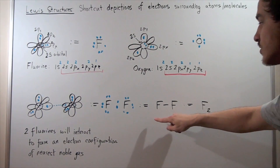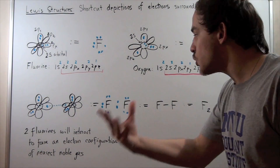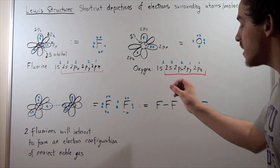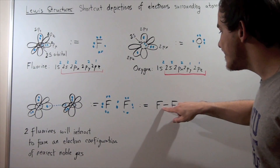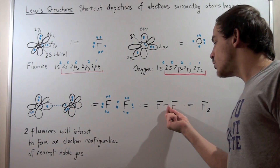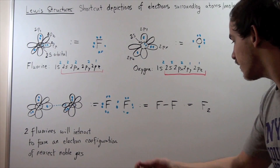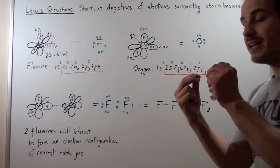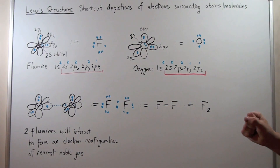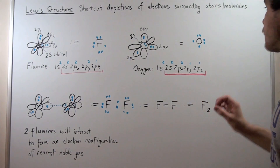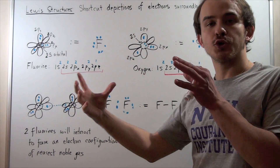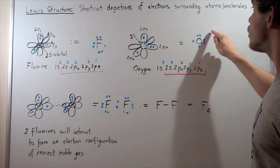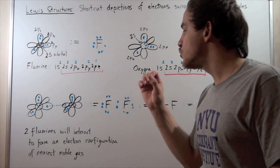This can also be written in an even shorter way: instead of drawing all outer electrons, we draw a single line between the two fluorines representing equal sharing of electrons, giving us F₂. This same method applies to oxygen: when two oxygen atoms interact, they form a double bond, sharing electrons equally to achieve the electron configuration of neon, just like fluorine does.